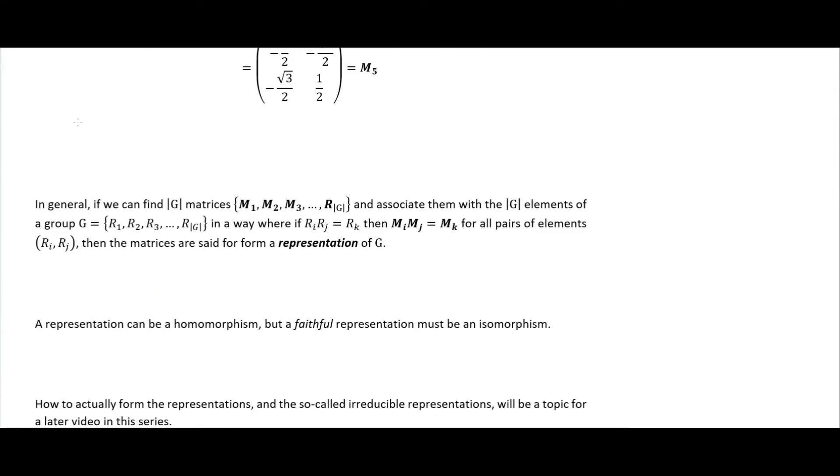In general, we can find up to the order of our group—in the C3V case it would be 6, the order of our group—that many matrices. We can associate them with that number of elements from our group in a way where if we take one element, do the binary operation with another element, we get a third element of our group, and it will be the same with our matrix representations. For all pairs of elements, if all the matrices work this way, they are said to be a representation of G.